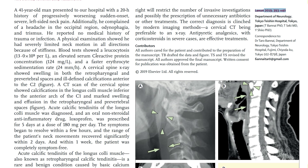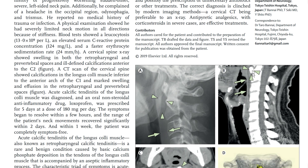Calcific tendonitis is essentially a hydroxyapatite deposition disease in the longus coli muscle, located in the prevertebral soft tissue. You typically have amorphous calcium or hydroxyapatite deposits at the level of the origin of the longus coli muscle, and when inflamed, you get prevertebral fluid here in the prevertebral or retropharyngeal space.